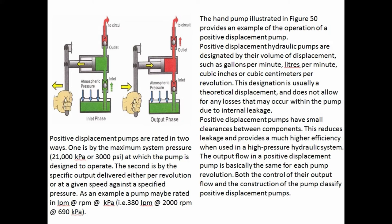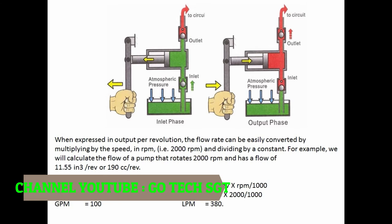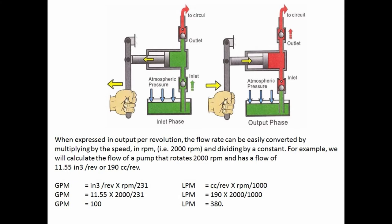Positive displacement pumps are rated in two ways: first, by the maximum system pressure (21,000 kilopascals or 3,000 PSI) at which the pump is designed to operate; second, by the specific output delivered per revolution or at a given speed against a specified pressure. For example, a pump may be rated at 380 LPM at 2,000 RPM at 690 kPa. The flow rate can be converted by multiplying by speed in RPM. For a pump rotating at 2,000 RPM with displacement of 11.55 in³/rev (190 cc/rev): GPM = (in³/rev × RPM) ÷ 231; LPM = (cc/rev × RPM) ÷ 1,000. Result: GPM = 100; LPM = 380.